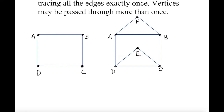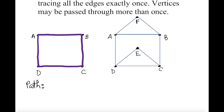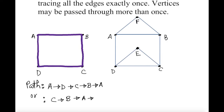Let me show you — can I trace it? A to D, D to C, C to B, B to A. I can even write the path: A to D, D to C, C to B, B to A. Or another way: C to B to A to D to C. You can do that — you can be creative.